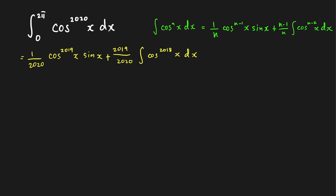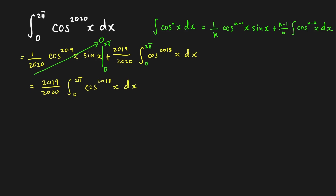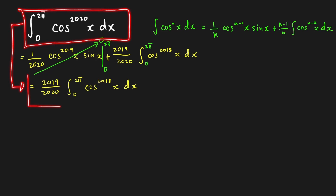Since this is a definite integral evaluated from 0 to 2π, the boundary term involving cosine and sine equals zero at both endpoints. Therefore, the result reduces to (2019/2020) times the integral from 0 to 2π of cosine^2018(x) dx. We can see a pattern: subtract 1 from the power for the coefficient's numerator, the denominator is that power, and subtract 2 from the power for the new integrand.